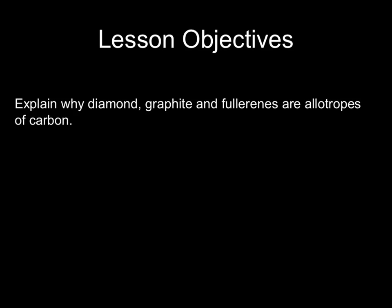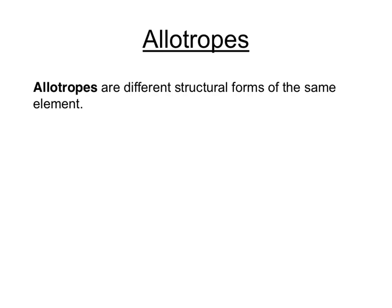Our first task is to understand what's meant by the term allotropes. Allotropes are different structural forms of the same element. In other words, they consist of the same atoms — carbon atoms — but joined together in different ways, by different bonding or in different structural forms.